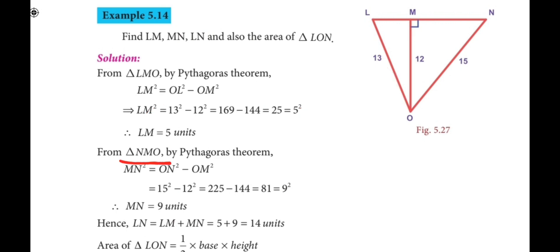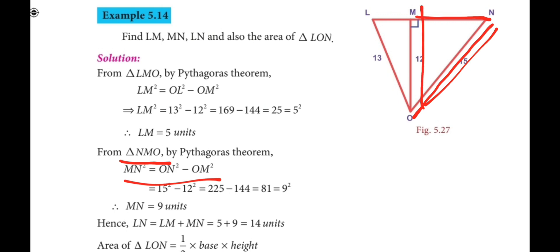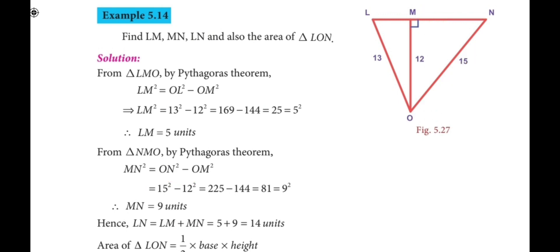From triangle NMO, by Pythagoras theorem, MN² = ON² − OM² = 15² − 12² = 225 − 144 = 81. Taking the square root gives MN = 9 units.